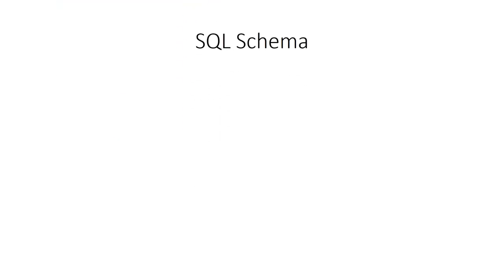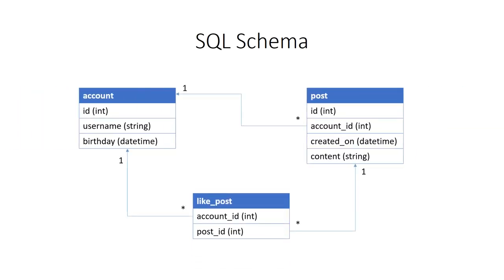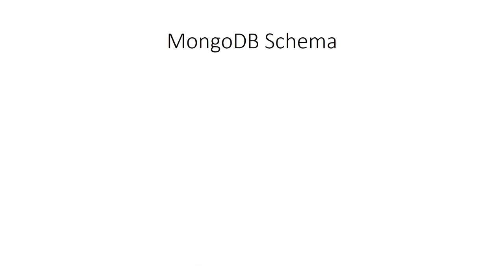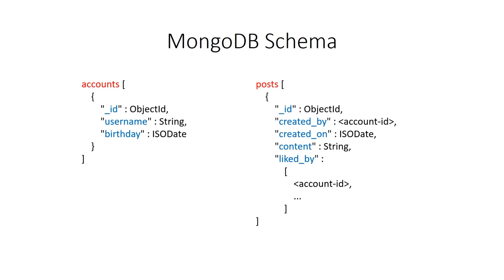In PostgreSQL, we have three tables: accounts, posts, and likes. We did not build any indices except for primary keys, which are the IDs. The data in our MongoDB database is stored in two collections: one for accounts and one for posts. The information about which account likes which posts is stored by references in the post document. This is a one-way reference, so in the account document it is not stored which posts it likes. There are no indices except for the ID fields.